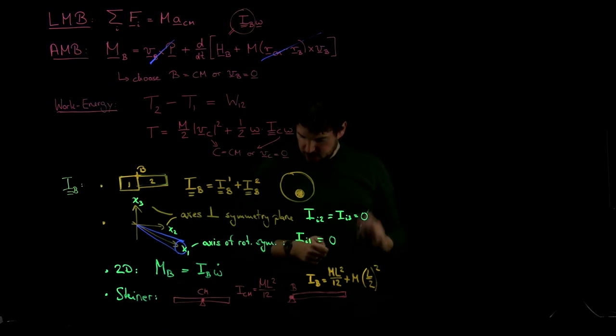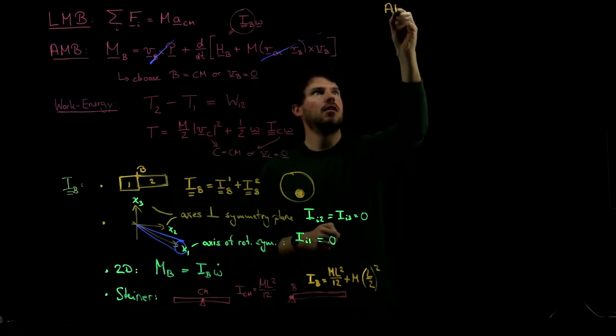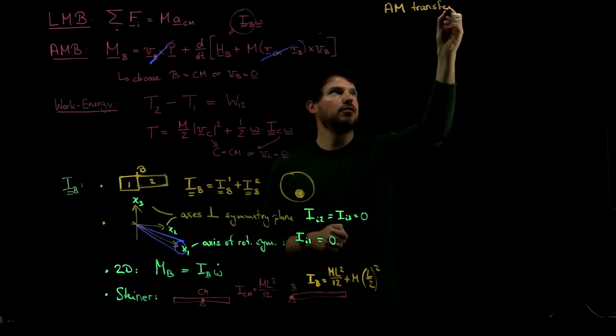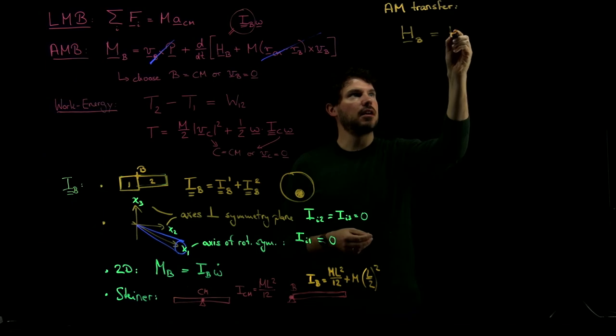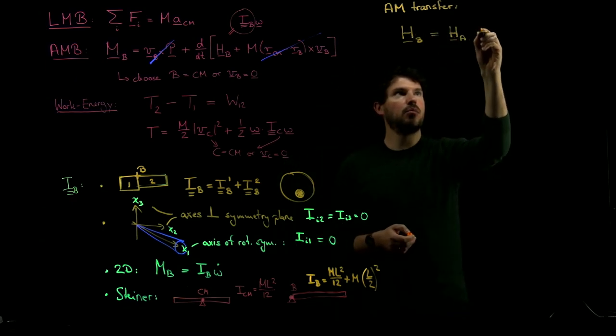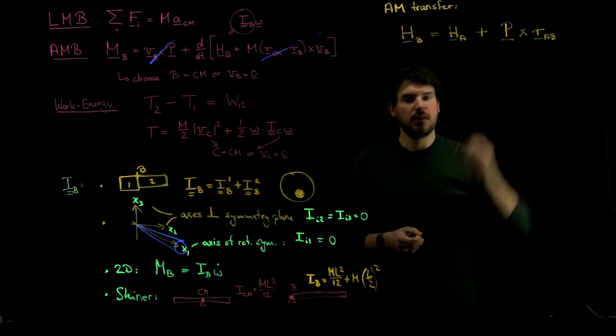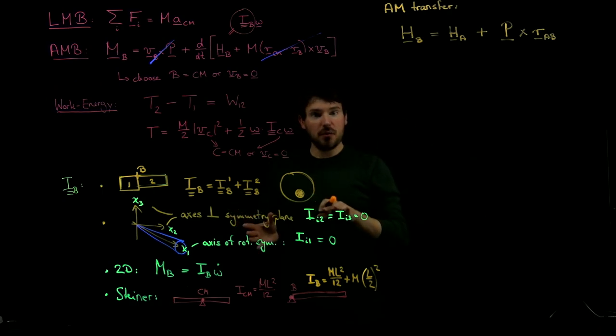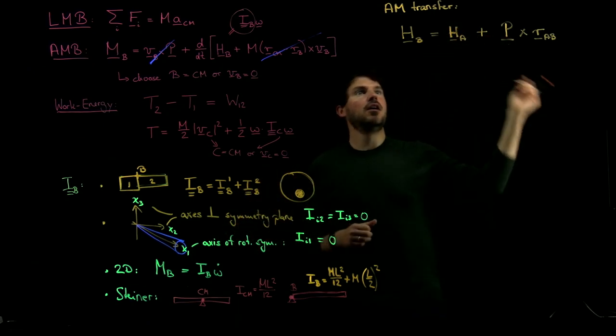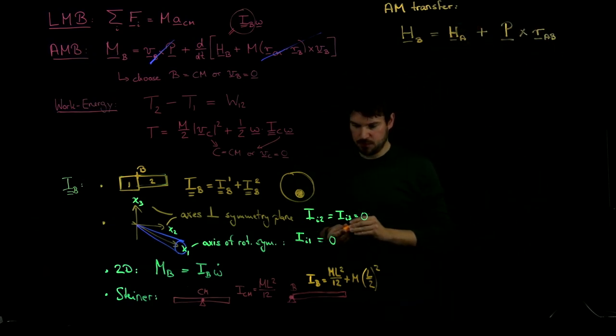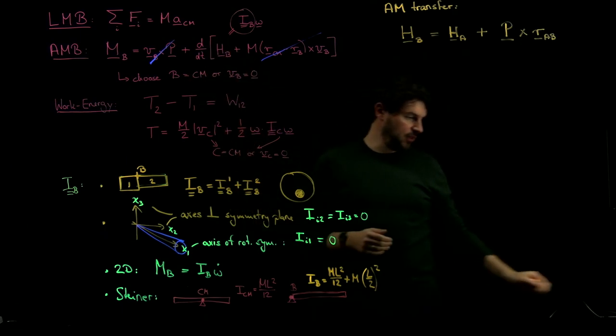Then the very last thing we discussed is the so-called angular momentum transfer formula. What this tells us is that the relation of the angular momentum with any two points, B and A, is like this: HB equals HA plus the linear momentum cross the vector from A to B. This is very nice because it applies to all points, not just the ones which are on the rigid body, but also to other points. If you know the angular momentum HA of some point which is on a rigid body and you want to hop to a point B which is off the rigid body, you can use that. That's everything we discussed when it comes to the kinetics of rigid bodies: LMB, AMB, and the work energy balance.